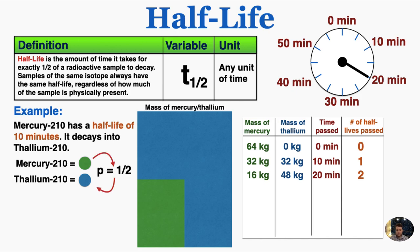This is using the law of large numbers, because mercury having a half-life of 10 minutes means that the probability of any one atom of mercury decaying into thallium in 10 minutes is one-half. So for any individual atom we can't meaningfully predict whether it will decay or not, but for very large numbers of atoms we know that one-half of the atoms that we have will decay.